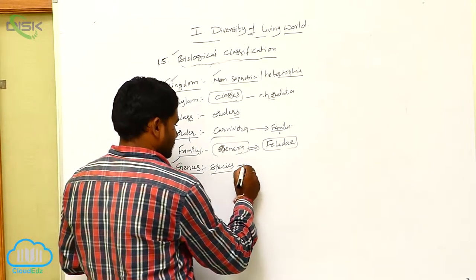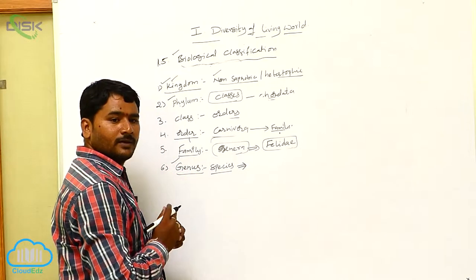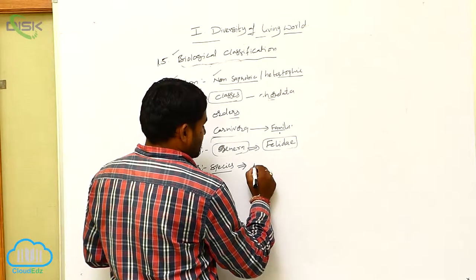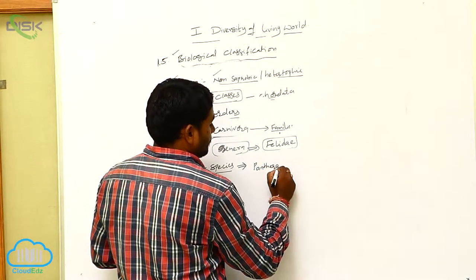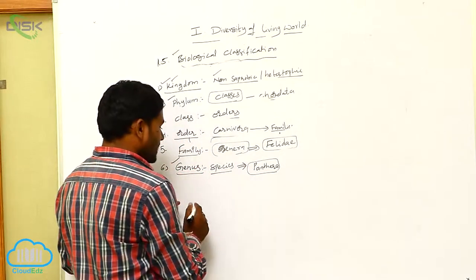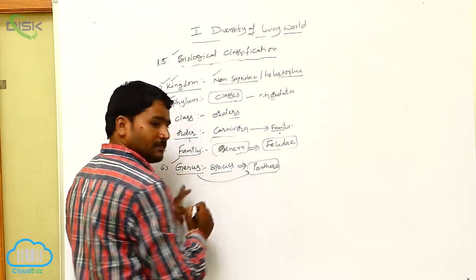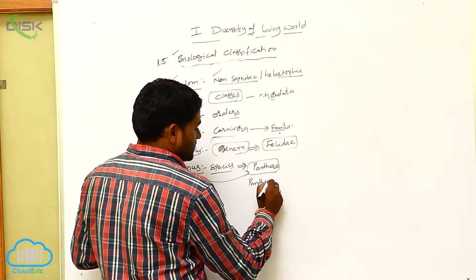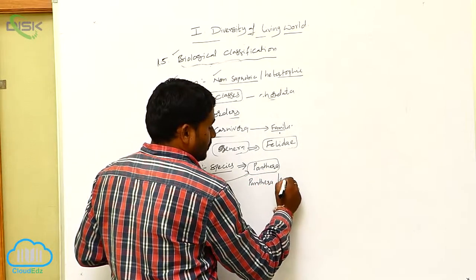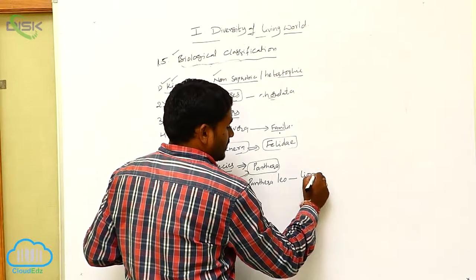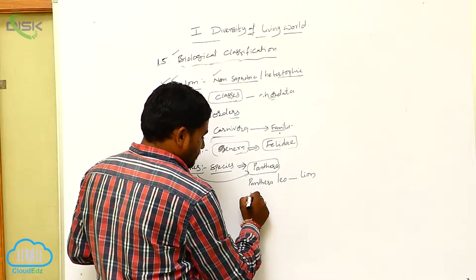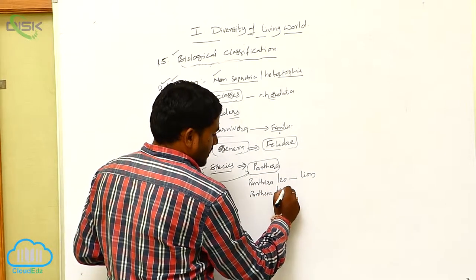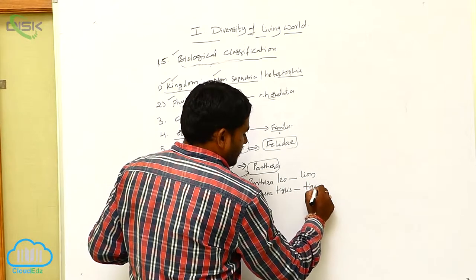For example, if you take genus Panthera — Panthera is a genus, and this genus has different types of species. Panthera leo is the scientific name of the lion. Next, Panthera tigris is called the tiger.